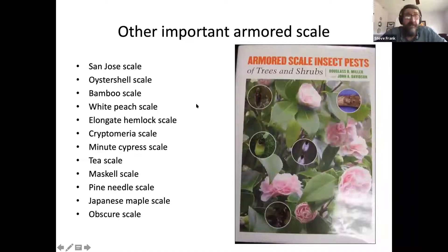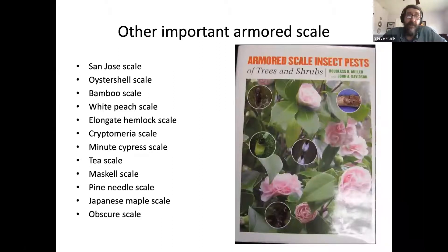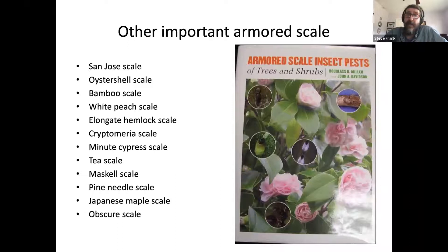As mentioned in the beginning, there are obviously thousands of scale species and we can't cover all of them. This is a great book by Doug Miller and John Davidson that outlines the armored scale pests of trees and shrubs, and there are other resources available also. There are armored scales on every plant species, so they're always a possibility.